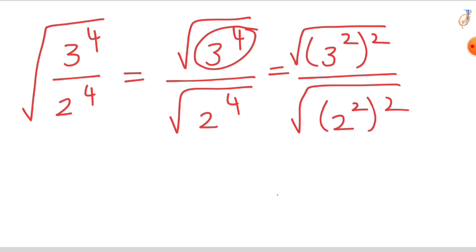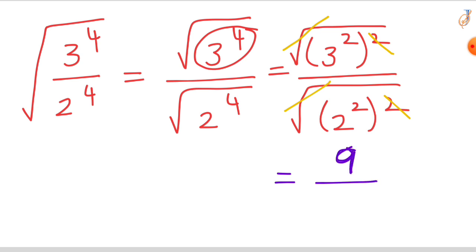So this becomes square root of 3^4 over square root of 2^4. We can write 3^4 as (3^2)^2, so the square root gives 3^2. Similarly, square root of 2^4 gives 2^2. This simplifies to 3 squared over 2 squared, which is 9 over 4, giving a final value of 2.25.